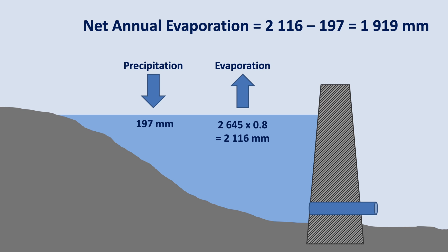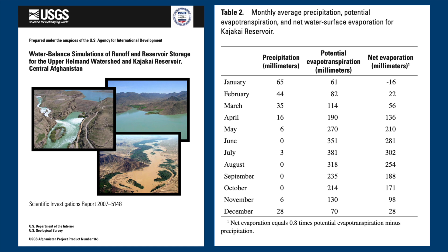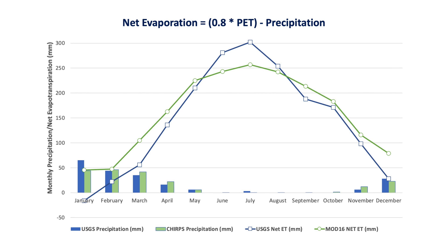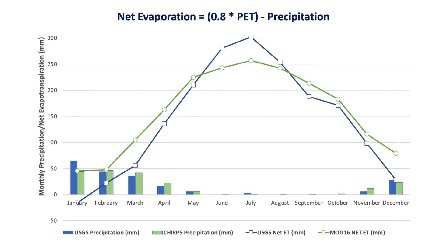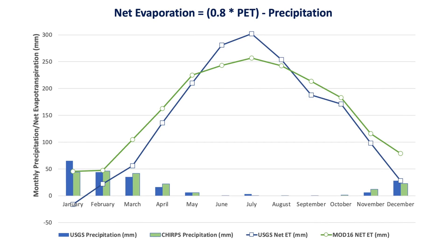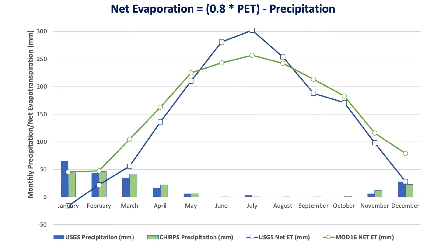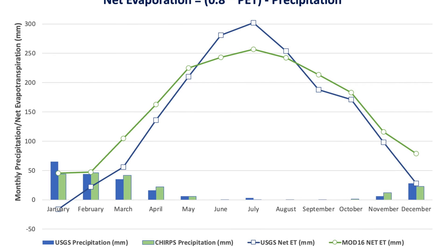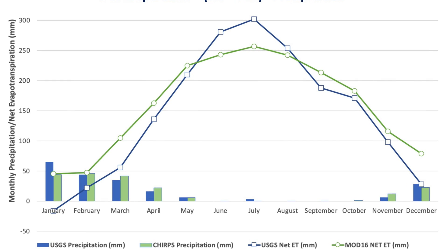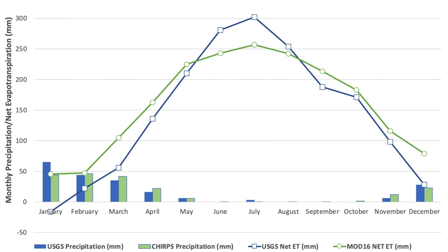So how does this compare with other studies? In 2007, the USGS published a report on the Kajaki reservoir — I'll leave a link in the description below. In Table 2, you can see the precipitation and PET data used in their simulations. The USGS data is in blue and our data is in green. I'm quite happy with the result because both datasets are quite similar. The differences are because they're based on different methodologies: our approach uses satellite measurements of the Kajaki reservoir area, while the USGS study uses data from individual weather stations in southern Afghanistan, which may or may not be representative of the Kajaki area.